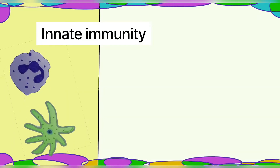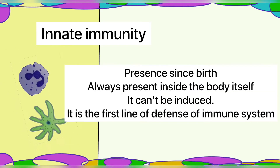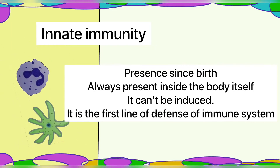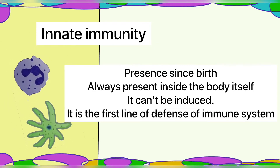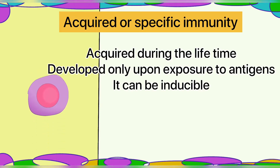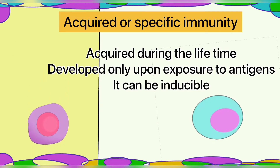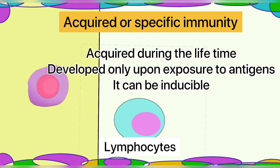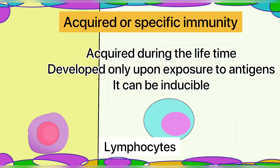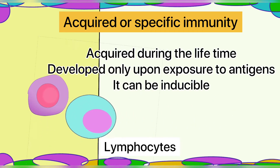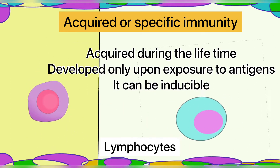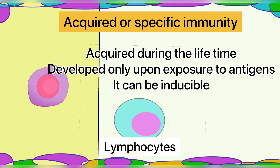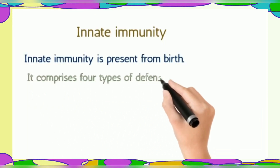Innate Immunity is present from birth — it is already present in our immune system. Acquired Immunity, on the other hand, is developed over time. The acquired or specific immune system is different from the non-specific innate immune system. In innate immunity, there are four types of defensive barriers: Physical Barrier, Physiological Barrier, Cellular Barrier, and Cytokine Barriers.